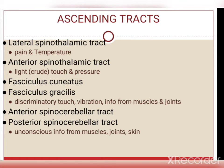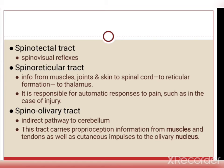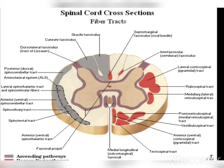The different ascending tracts are: the lateral spinothalamic tract (pain and temperature), anterior spinothalamic tract (crude touch and pressure), fasciculus gracilis and cuneatus (discriminatory touch, vibration, and information from muscles and joints), anterior and posterior spinocerebellar tracts (unconscious information from muscle, joint and skin), spinotectal tract (spinovisual reflexes), spino-reticular tract (information from muscles, joints and skin to the reticular formation and then to the thalamus, responsible for automatic responses to pain), and the spino-olivary tract (an indirect pathway to the cerebellum carrying proprioceptive and cutaneous impulses to the olivary nucleus).